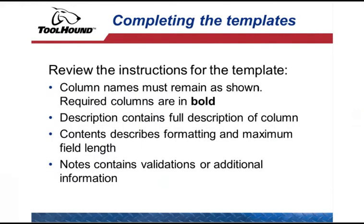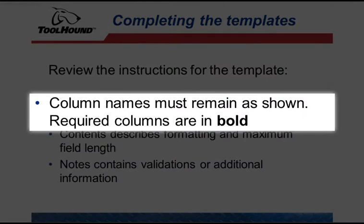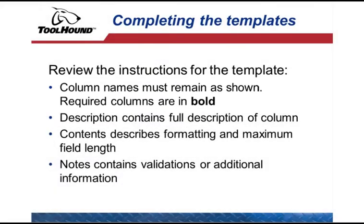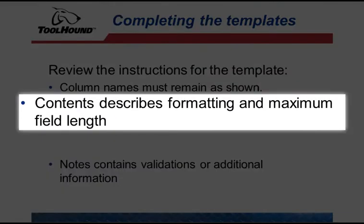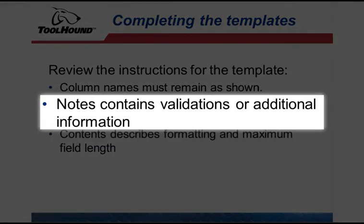For each spreadsheet template, it is important to review the Instructions tab for explanations on how to enter the data for each column. The column names on the first worksheet must remain exactly as they appear. Any columns shown in bold are required fields and must be completed, otherwise the data will not be imported. The Description gives an expanded description of the column. The Contents column defines the format of the information to be entered, including the maximum number of characters allowed for the field. For character columns, anything too long for the field will be truncated. For fields that reference other lists, such as crafts, vendors, manufacturers, etc., the column must contain the ID for that reference. The Notes column describes any special validation or other information for the column.